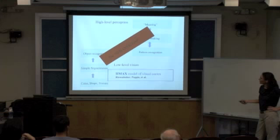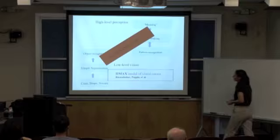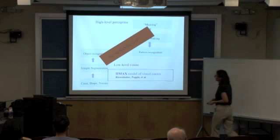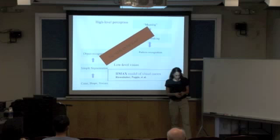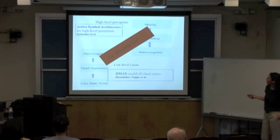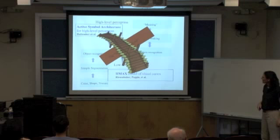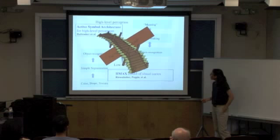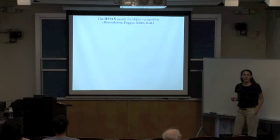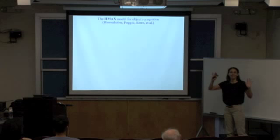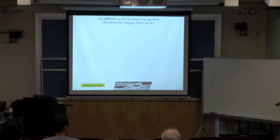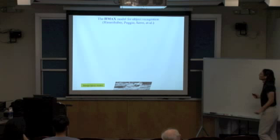What we're doing in my group is taking two models — one of the low level and one of the high level — and trying to marry them. The low-level model is called the HMAX model of the visual cortex, developed at MIT by Riesenhuber, Poggio, and others. The high-level model is the Active Symbol Architecture of Hofstadter et al. The idea is to build a bridge between them. Let me tell you a bit about the HMAX model.